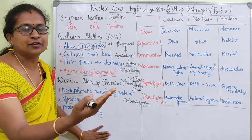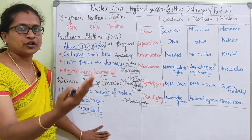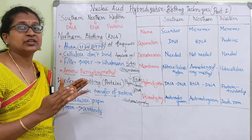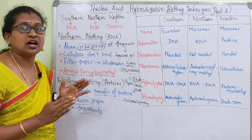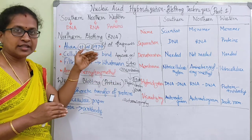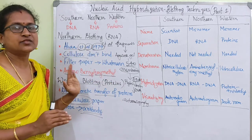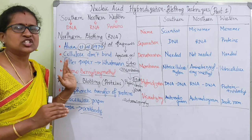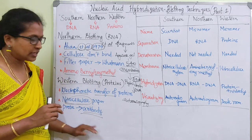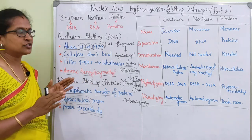Next is probe hybridization and autoradiography - the procedure is the same from southern to western blotting. The main differences are: what filter paper we use, and what probe we use.